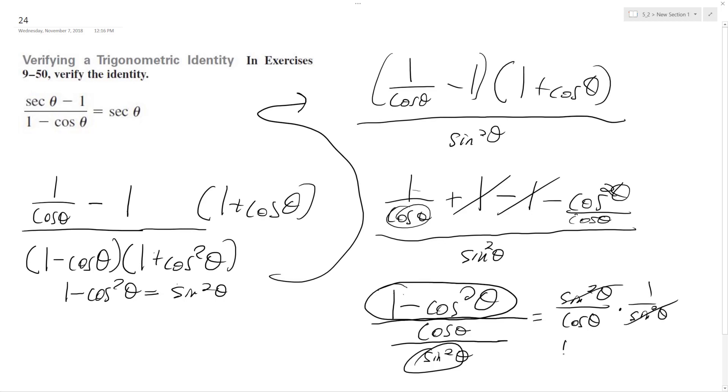These cancel out. I get 1 over cosine theta, which is equal to secant theta.